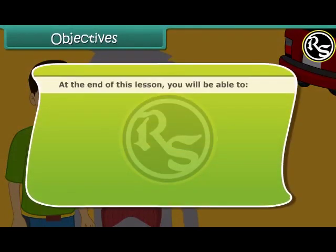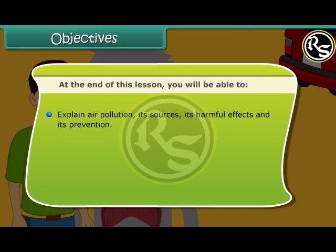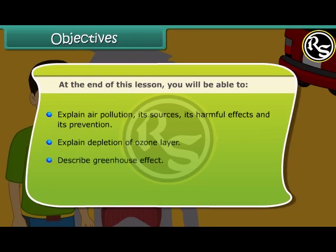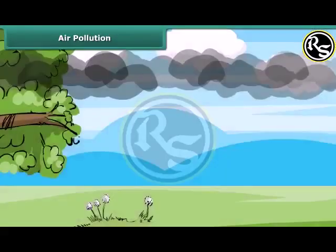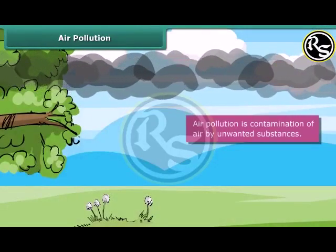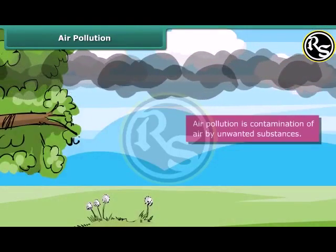At the end of this lesson, you will be able to: explain air pollution, its sources, its harmful effects and its prevention; explain depletion of the ozone layer; describe the greenhouse effect; and explain the formation of acid rain.